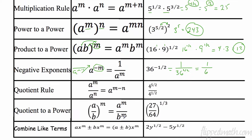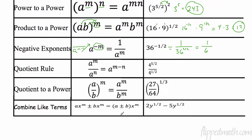The quotient rule down here: same base, I subtract my exponents. Four and four are the same base — I subtract my exponents. Five halves minus one half is four halves, which reduces to two, and four to the second power is 16.